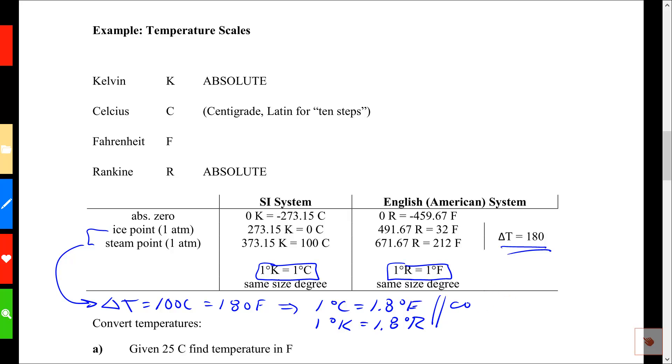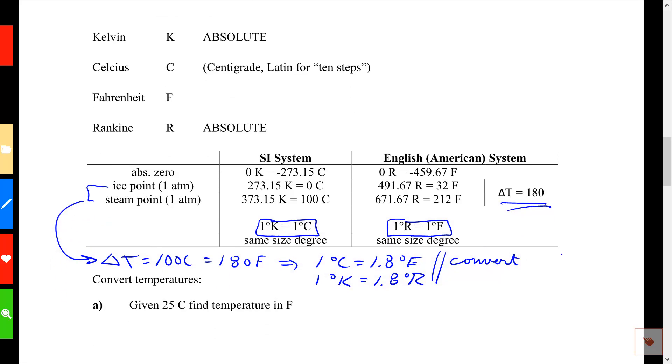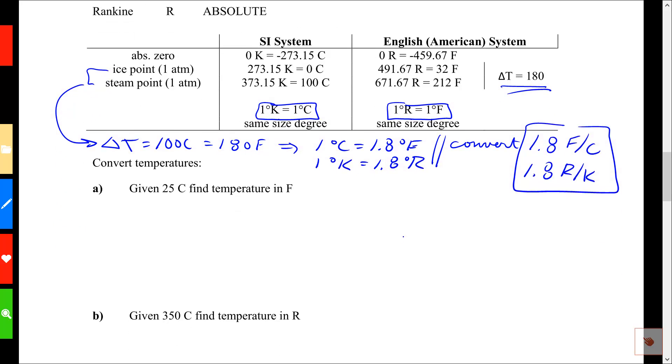I could say convert, let me scroll up a bit, I could convert 1.8 Fahrenheit per degree C, or I could convert 1.8 Rankine per degree Kelvin. And we're going to use these as we do some examples. Let's look at some examples.